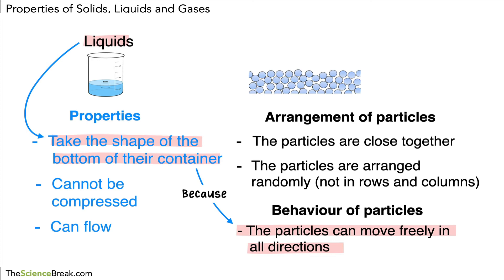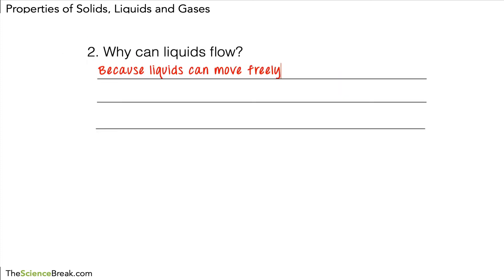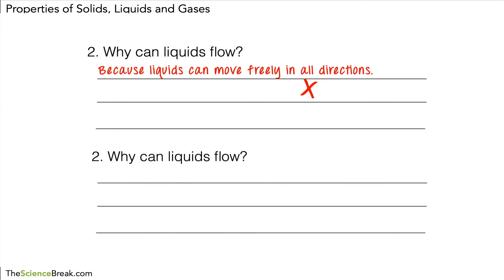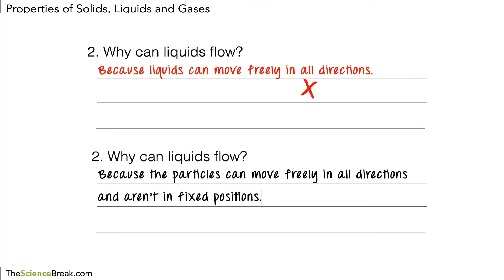Let's look at how it can be a little confusing. 'Why can liquids flow?' Someone has written: 'because liquids can move freely in all directions.' Again, they're talking about the liquid rather than the particles — essentially rephrasing the question without mentioning particles, so this would not score a mark. A better answer using the word 'because': it's because the particles can move freely in all directions and they aren't in fixed positions. This is better because we're relating the behavior of the particles to the property of the liquid.